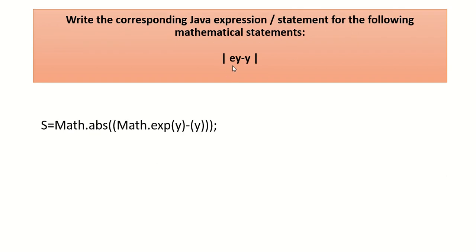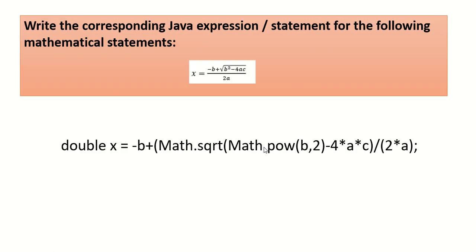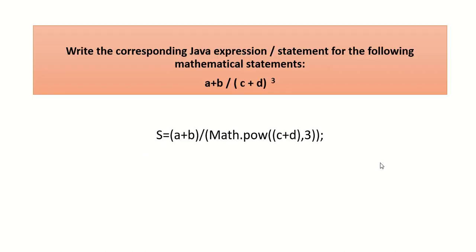The third one you can see is Math.abs and Math.exp of y minus y. The fourth one is square root of minus b plus square root of b square minus 4ac by 2a. So minus b plus Math.sqrt of Math.pow of b comma 2 minus 4 into a into c divided by 2 into a.